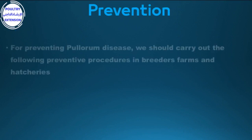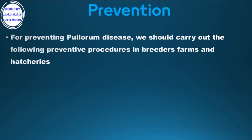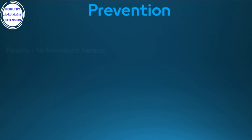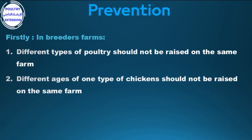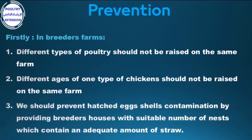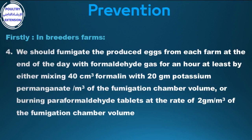Prevention: For preventing pullorum disease, we should carry out the following preventive procedures in breeders' farms and hatcheries. In breeders' farms: 1. Different types of poultry should not be raised on the same farm. 2. Different age groups of one type of chicken should not be raised on the same farm. 3. Prevent hatched egg shell contamination by providing breeder houses with a suitable number of nests containing adequate amounts of straw. 4. Fumigate produced eggs from each farm at the end of the day with formaldehyde gas for at least one hour, by mixing 40 cubic centimeters of formalin with 20 grams of potassium permanganate per cubic meter of fumigation chamber volume, or by burning paraformaldehyde tablets at 2 grams per cubic meter of fumigation chamber volume.